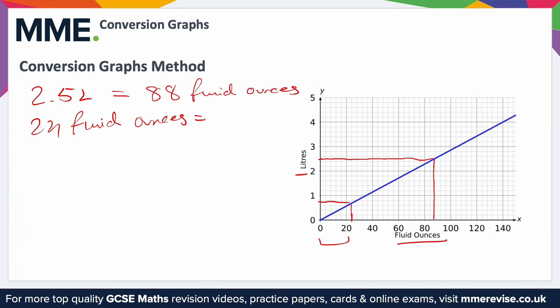Then we just need to read it off. So we need to figure out what a minor square is worth on the y-axis. Well between 0 and 1, again there are 5 squares, 1 divided by 5 is 0.2, so each minor square is worth 0.2. And this is halfway between the third and the fourth minor square, so it's going to be 0.6, and then it's halfway between 0.6 and 0.8, so let's say it's 0.7 litres.